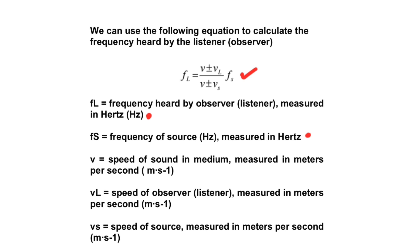VL is the velocity of the observer or the velocity of the listener, in meters per second. VS is the speed of the source, also in meters per second. So this is the equation we use to calculate the frequency heard or observed by the listener.